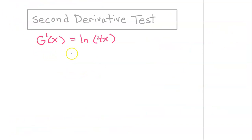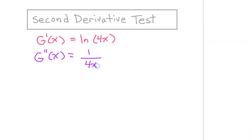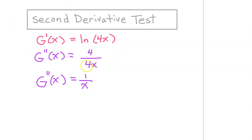Now I'll show you how to use the second derivative test to determine relative max, relative min, or neither. We need to find the second derivative. The derivative of the natural log of u is 1 over u times u prime. The derivative of 4x is 4, which goes in the numerator, and the 4s cancel out, leaving 1 over x. To apply the second derivative test at one-fourth, we evaluate the second derivative at one-fourth: 1 over one-fourth.